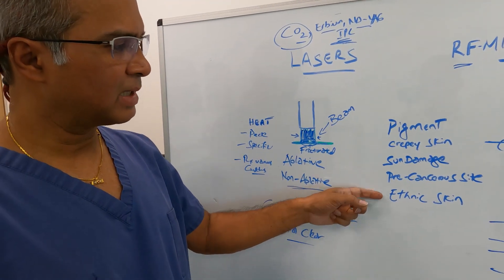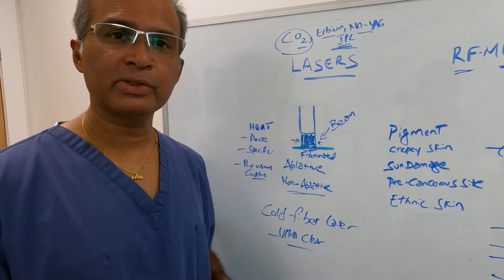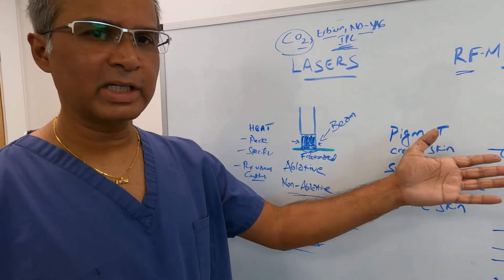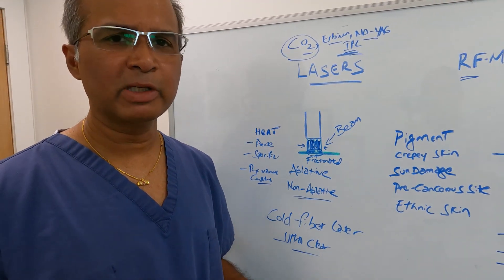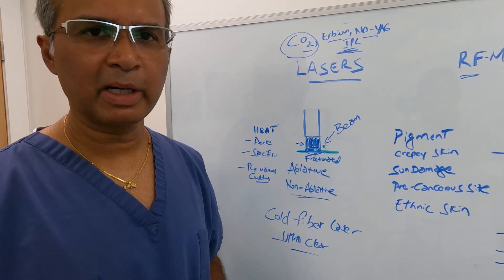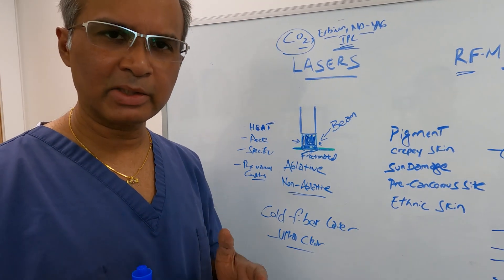Hence called a cold fiber laser that can avoid any pigmentation issues for ethnic skin. For example, in my practice I have something called an Ultra Clear laser, which is called a cold fiber laser. I also have a CO2 laser, IPL, hair removal laser. For pigmented skin, sun damaged skin, precancerous skin, ethnic skin, lasers are probably best to use.